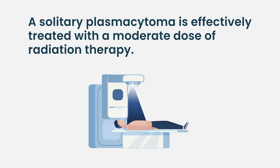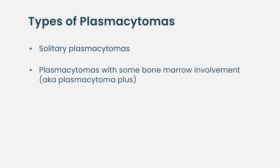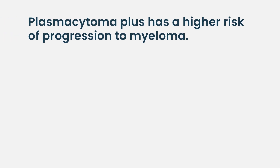If bone marrow plasma cells are greater than 10%, that's multiple myeloma and we treat it accordingly. Solitary plasmacytoma is treated with radiation — typically higher doses than palliative radiation. Palliative radiation for pain might be around 20 Gray, whereas definitive treatment for a plasmacytoma is in the range of 40 to 50 Gray, aiming to eradicate all disease in that area. There are two subtypes: solitary plasmacytoma and plasmacytoma with minimal marrow involvement, sometimes called plasmacytoma-plus, and both are treated with radiation.